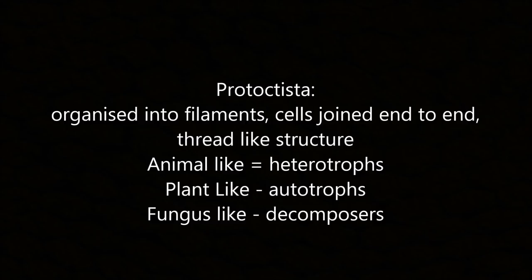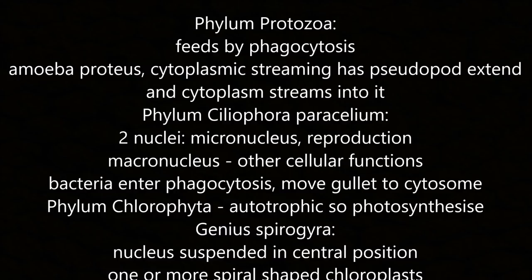Protoctista are organised into filaments of cells in a thread-like structure; types include animal-like (heterotrophs), plant-like (autotrophs) and fungus-like (decomposers). Phylum Protozoa feed by phagocytosis; amoeba has cytoplasmic streaming with a pseudopod extending and cytoplasm flowing into it. Phylum Ciliophora (Paramecium) has two nuclei: a micronucleus for reproduction and a macronucleus for other cellular functions; bacteria enter by phagocytosis and are moved to the cytostome. Phylum Chlorophyta is autotrophic (photosynthetic); Spirogyra has a nucleus suspended centrally with one or more spiral-shaped chloroplasts.